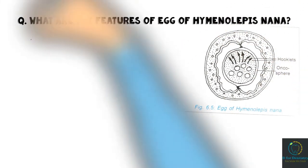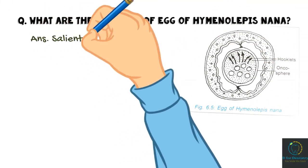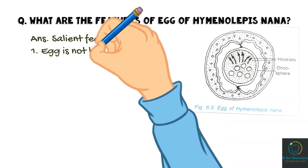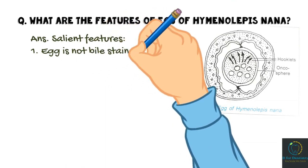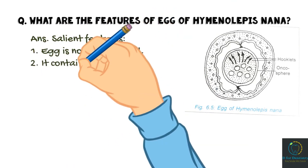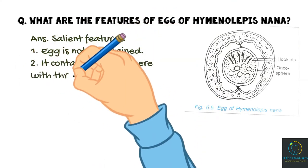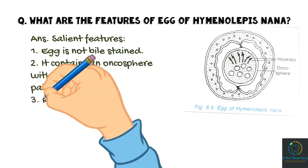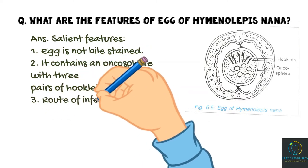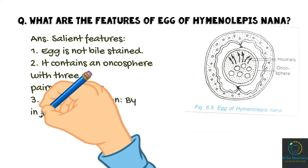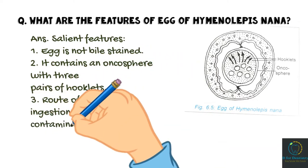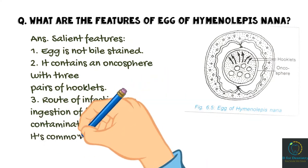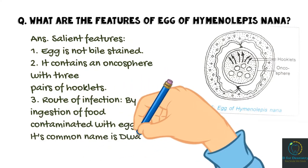What are the features of the egg of Hymenolepis nana? Salient features: The egg is not bile-stained. It contains an oncosphere with three pairs of hooklets. Route of infection is by ingestion of food contaminated with eggs. Common name is dwarf tapeworm.